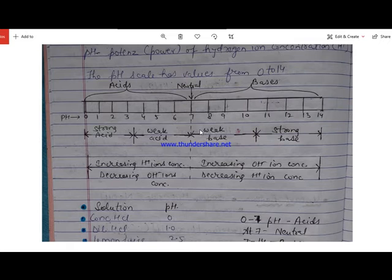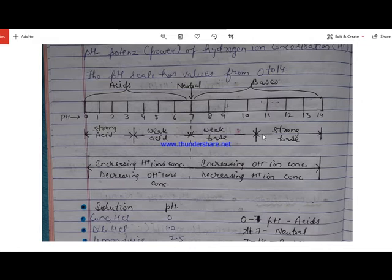At pH 7 the solution is neutral. From 7 up to 10.5 the solution would be a weak base, and from 10.5 to 14 the solution would be a strong base.